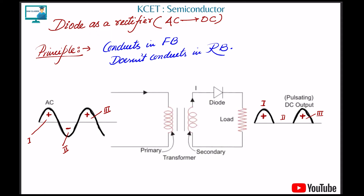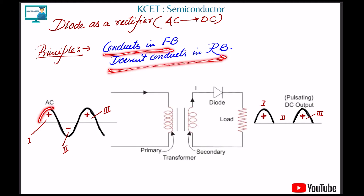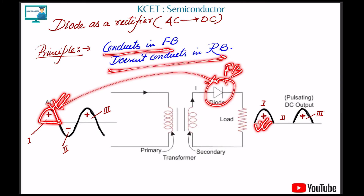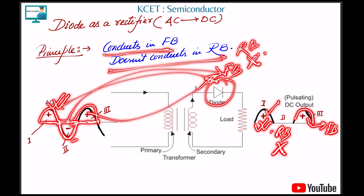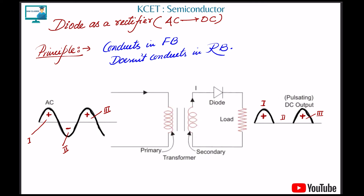A rectifier is a device that converts AC to DC — alternating current to direct current. A diode conducts in forward bias and doesn't conduct in reverse bias. In a half-wave rectifier with one diode, the positive half-cycle of AC forward-biases the diode and passes through, while the negative half-cycle reverse-biases it and is blocked. So we only get the positive cycles as output — hence it is called a half-wave rectifier.